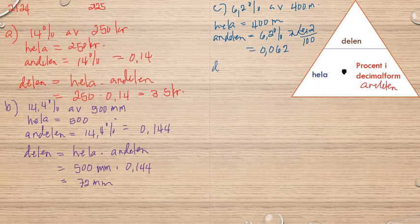So delen (the part) equals hela (the whole) times andelen (the proportion) in decimal form. So hela is 400 meters multiplied by 0.062. So we get 400 multiplied by 0.062, which is 24.8 meters.